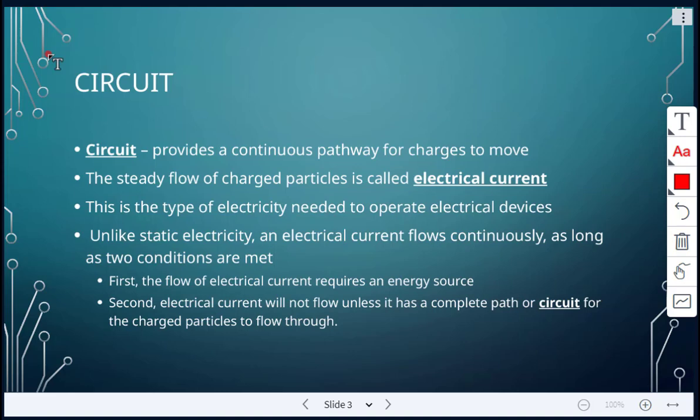As long as these two conditions are met. Firstly, the flow of electrical current requires an energy source, such as a battery. Secondly, the electric current won't flow unless it has a complete path. That's the circuit. Those charged particles have to be able to flow through a complete path or circuit.